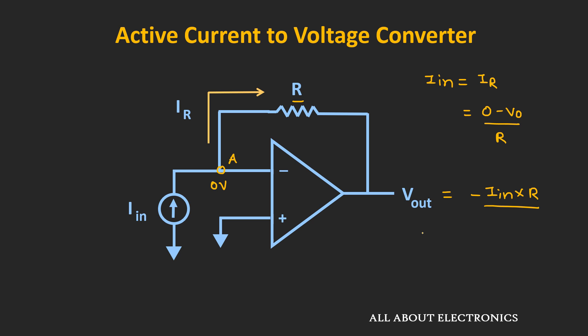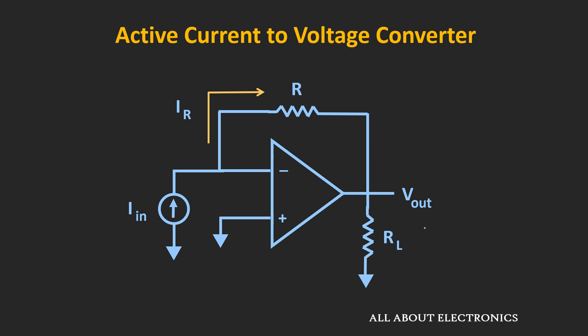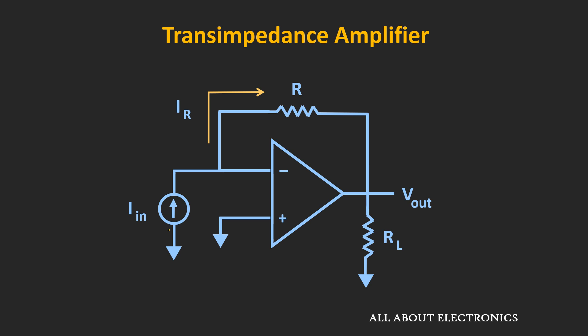As you can see, the output voltage Vout is proportional to the input current, so in this way we can convert the input current into the output voltage. In this circuit, even if you connect a load at the output terminal, the output voltage will remain as it is — it is independent of the load resistance. This type of current-to-voltage converter is also known as the trans-impedance amplifier, because the ratio of output voltage to input current has a unit of impedance.